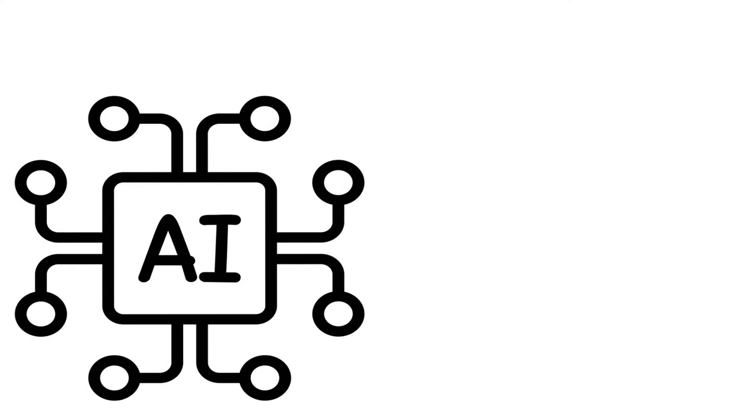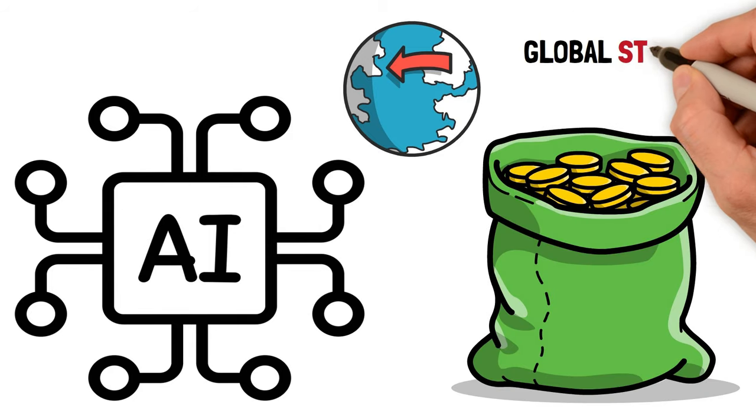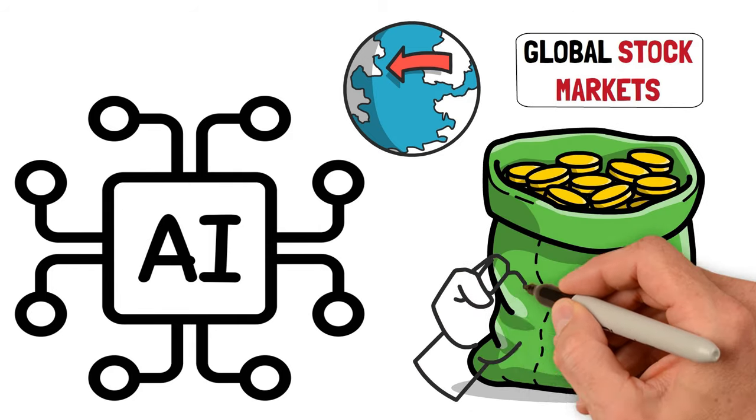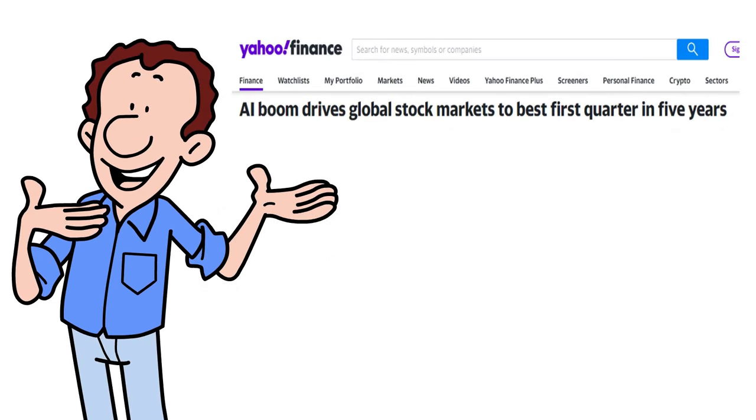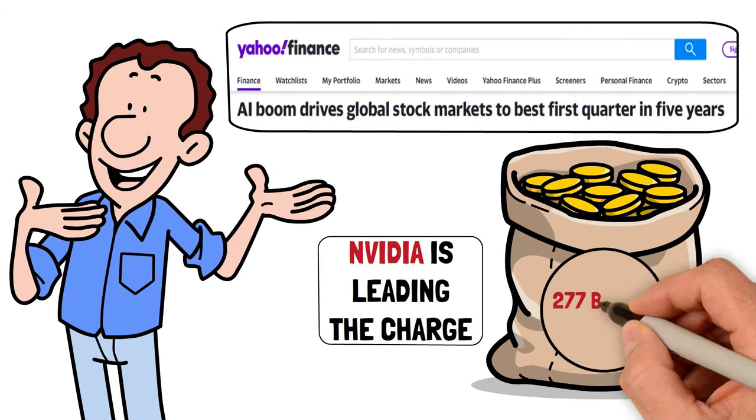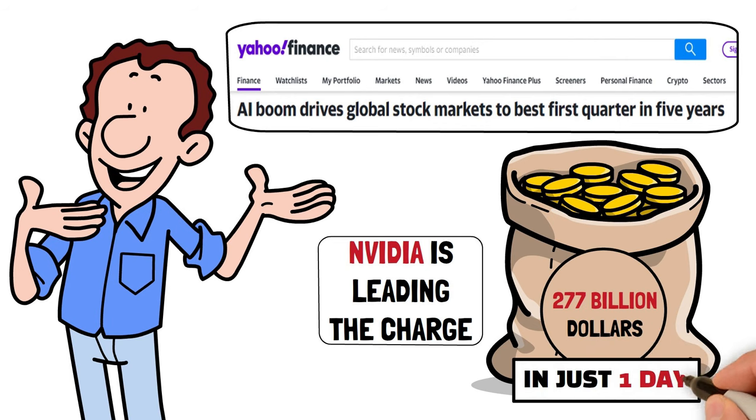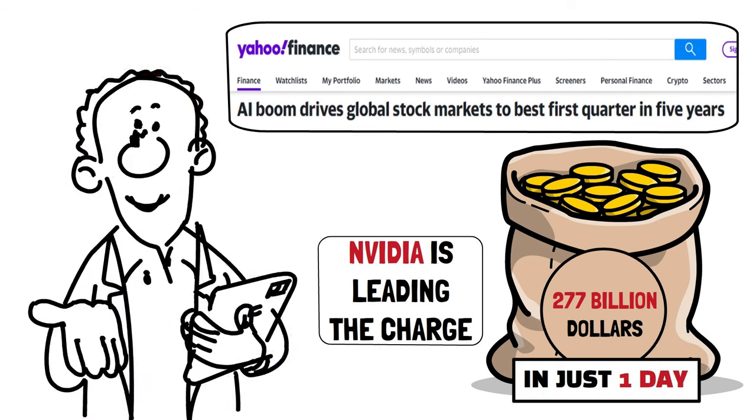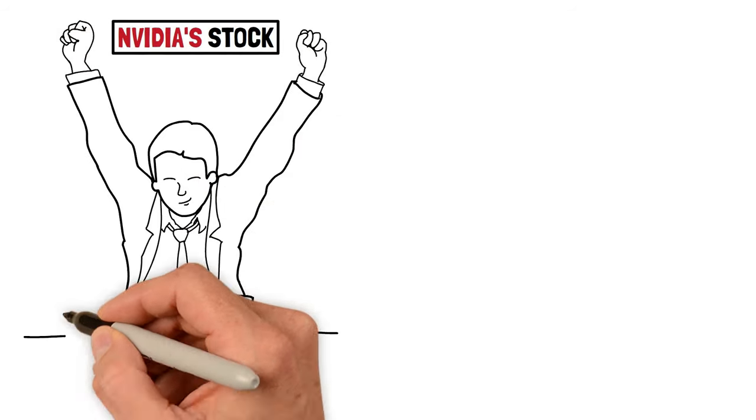The AI boom is real and it's taking over the world, reshaping economies and steering global stock markets to their strongest first quarter in half a decade. What's even more interesting is that Nvidia is leading the charge, which recently added $277 billion to its market value in just one day. Yes, you heard that right. Nvidia's stock is on a meteoric rise and investors are jumping at the chance to get a piece of the action.